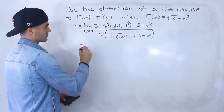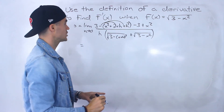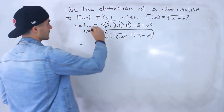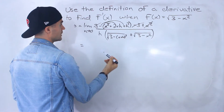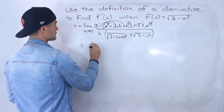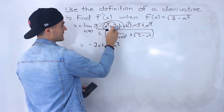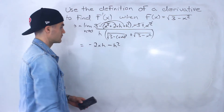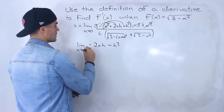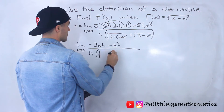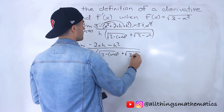We distribute the negative inside the bracket so all the signs change. The 3 minus 3 cancels out, and negative x squared cancels with positive x squared, leaving us with negative 2xh minus h squared in the numerator. This is still the limit as h approaches 0, all over h times the square root of 3 minus (x plus h) squared plus the square root of 3 minus x squared.